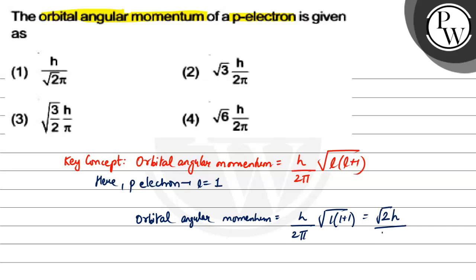Which is h under root 2 by 2 pi, which is going to be equal to h by under root 2 pi. The correct option is option number one. I hope you understood. Thank you very much, all the best.